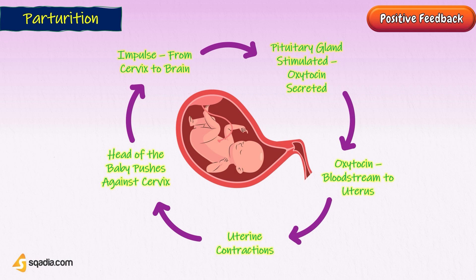In response, the cervix starts to dilate in preparation for the passage of the baby. This cycle of positive feedback continues with increasing levels of oxytocin, stronger uterine contractions, and wider dilation of the cervix until the baby is pushed through the birth canal and out of the body. At that point, the cervix is no longer stimulated to send nerve impulses to the brain, and the entire process stops. That is all about the two types of mechanisms of action through which homeostasis is maintained.